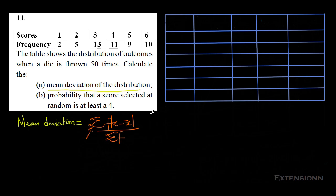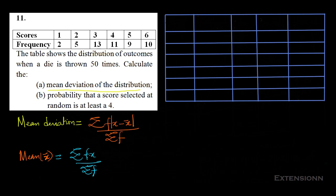To calculate mean deviation, we need the frequency f (given), the scores x (given), but we don't yet know x̄, the mean. So we first calculate the mean using the formula: x̄ = Σfx / Σf, which is the summation of frequency times scores divided by the summation of frequencies.